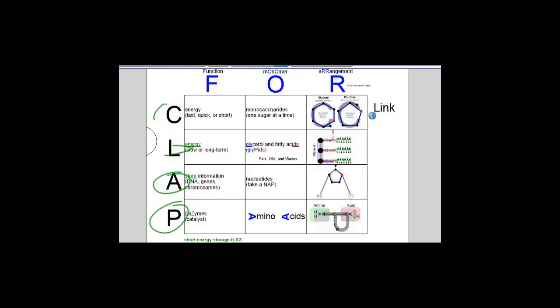If you can remember a little saying down here, short energy storage is easy. Carbohydrates give us short-term energy. Lipids give us long-term energy. Nucleic acids store information. And proteins, one function is enzymes. But notice I use the letter E and Z from enzymes to give us short energy storage is easy. And that helps you remember everything in the functions column.